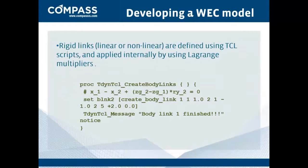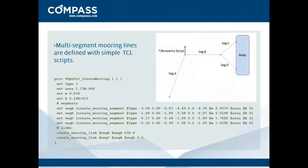This is very interesting. As we did for the mooring segments, the rigid links — which can be linear or non-linear — are also defined using these DCL scripts. You see simple functions; there are a few lines and they are all in the user's manual. The multi-segment mooring lines are a little more advanced, but it's the same idea. You could define in the arguments of the mooring segment functions, and include the buoyancy forces in the connecting points, different segments connected with each other, etc. It's quite an interesting and advanced feature.